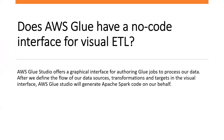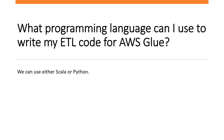Does AWS Glue have a no-code interface for visual ETL? Yes, AWS Glue Studio offers a graphical interface for authoring Glue jobs to process our data. After we define the flow of our data sources, transformations and targets in the visual interface, AWS Glue Studio will generate Apache Spark code on our behalf. What programming language can I use to write ETL code for AWS Glue? We can use either Scala or Python. When we define source and target, AWS Glue Studio automatically generates a script in either Scala or Python, but we can also use either language to build a custom script and upload it.